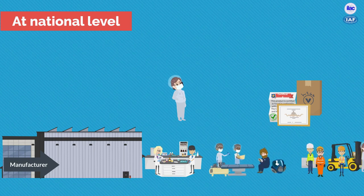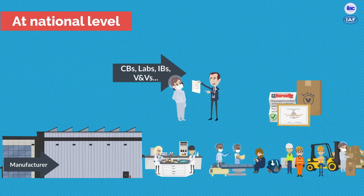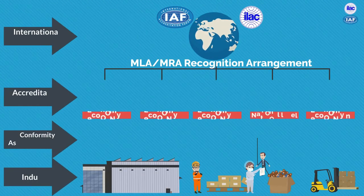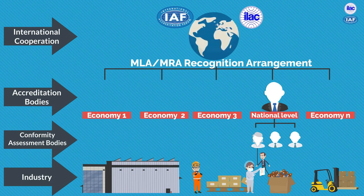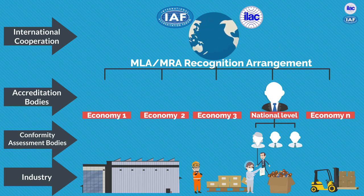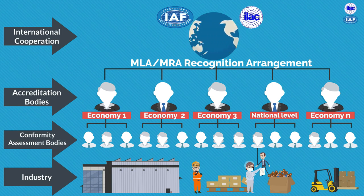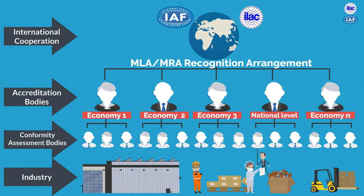Once the product conformity is approved, a certificate of conformity or a report is provided to the manufacturer. To prove its competence, the conformity assessment body is assessed at the national level by an accreditation body which provides an accreditation certificate to the conformity assessment body. The mutual recognition between accreditation body signatories is based on the same process being applied in a harmonised and equivalent way in economies around the world. This way, under the umbrella of the ILAC and IAF arrangements, a report, certificate or statement delivered in one economy by an accredited conformity assessment body is trusted as equivalent in the other economies.